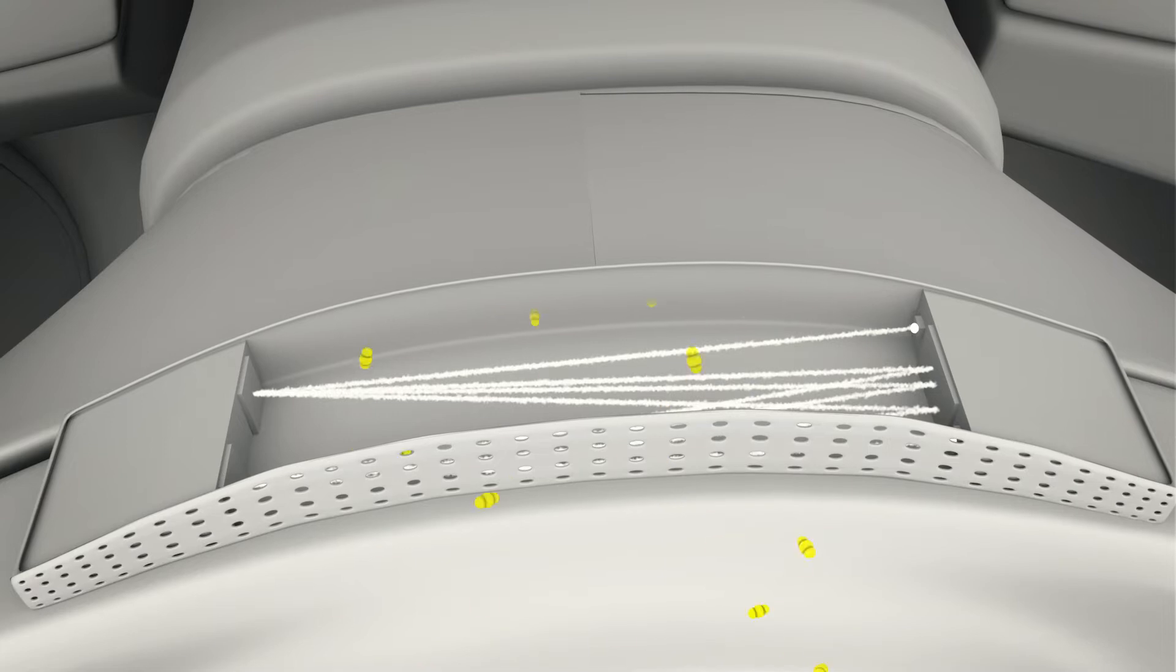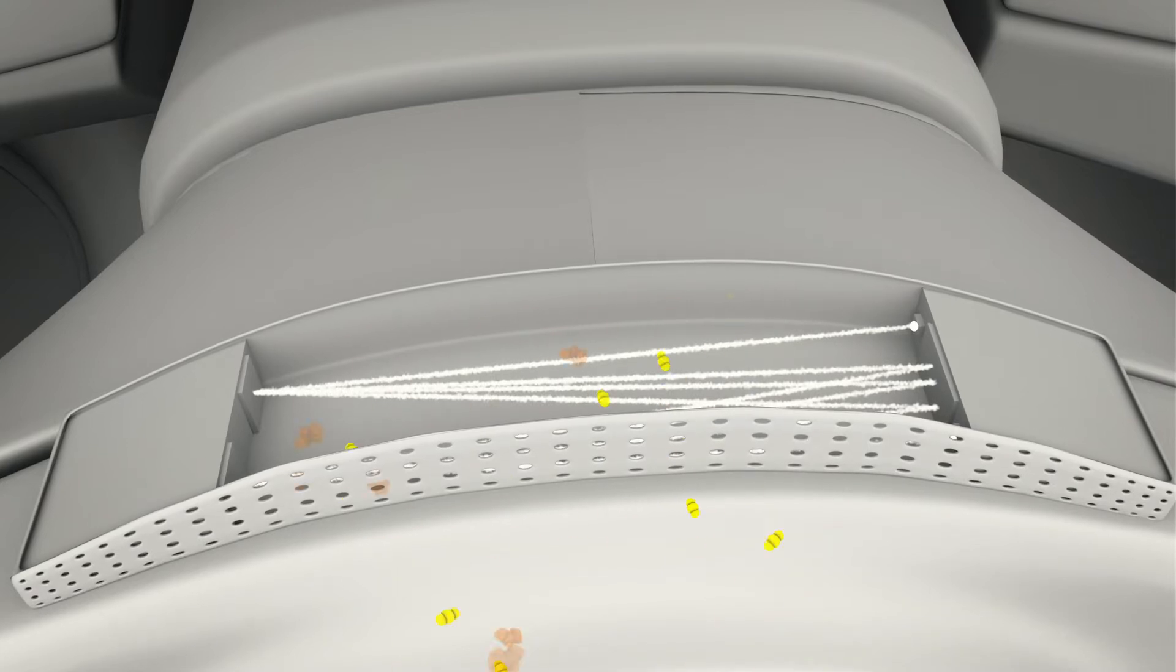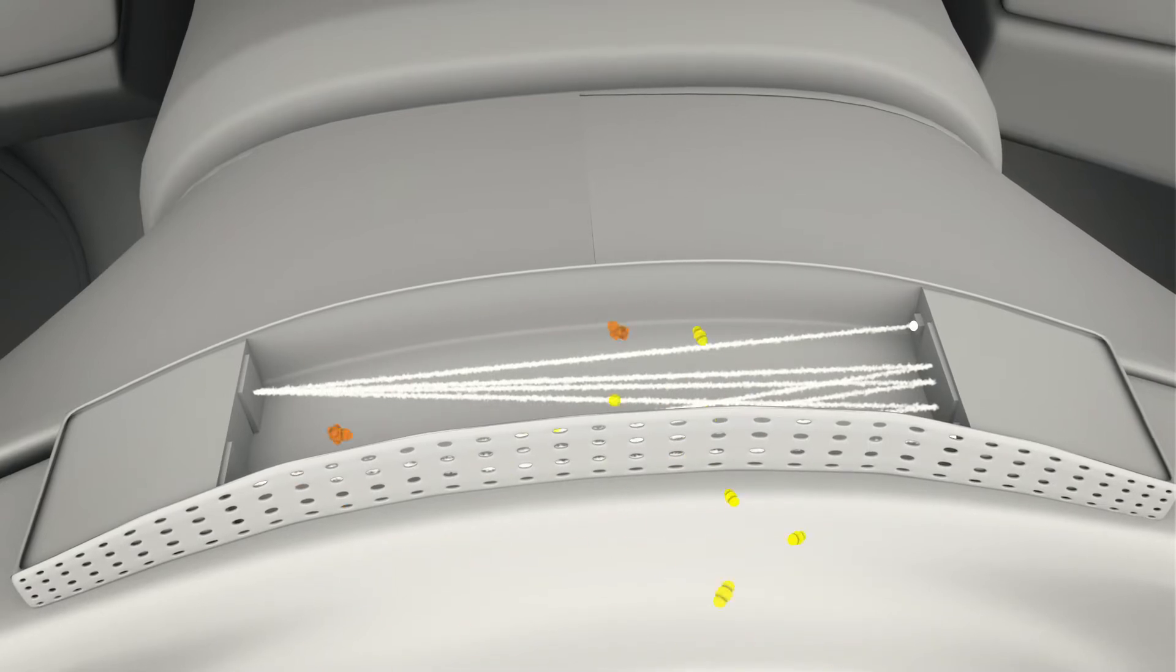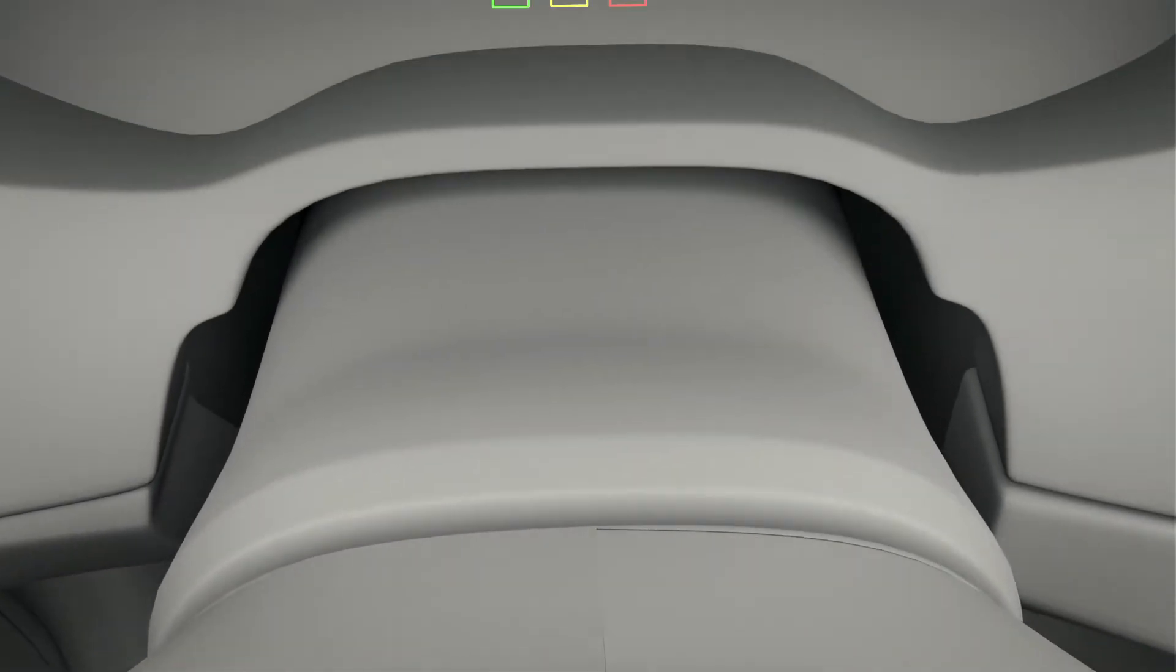If the proportion of alcohol molecules to carbon dioxide molecules is above a certain range, it indicates an illegal blood alcohol level.